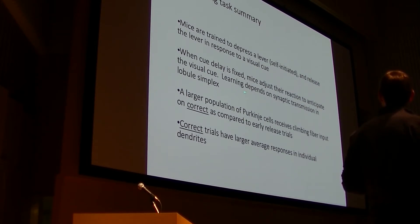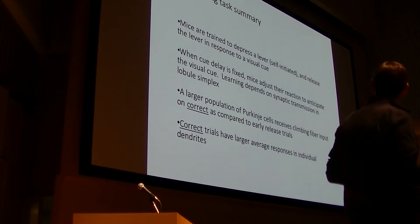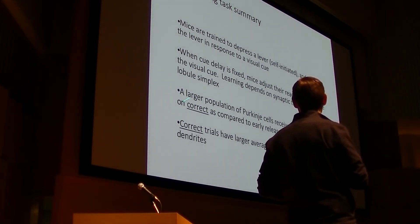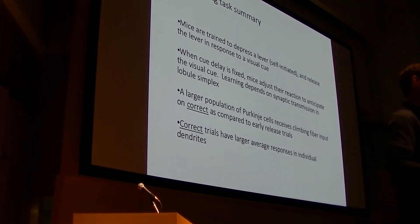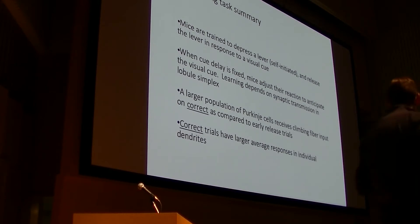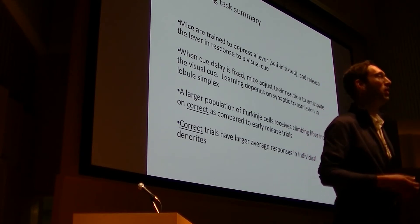So what I've told you so far is that we can train mice to press the lever and release in response to a visual cue. And when this cue delay is fixed, the animals adjust their reaction time to anticipate it. And this learning depends on this region of lobule simplex. But what was really surprising to us and completely unanticipated is that we observe significantly enhanced responses from the climbing fibers when animals correctly timed their movements. And this is really not consistent, in our view, with signaling errors.